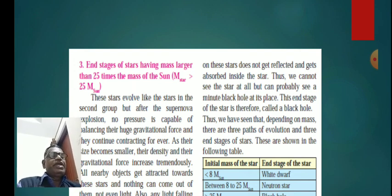Thus we cannot see the star at all but can probably see a minute black hole in its place. This stage of the star is therefore called black hole. Thus we can see that depending on mass, there are three paths of evolution and three end stages of stars.